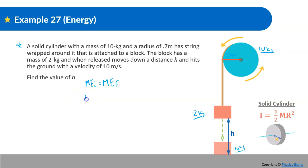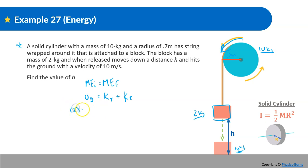At the very beginning, the only energy is gravitational potential energy. Right before the block hits the ground, there are two types: translational kinetic energy from the block, and rotational kinetic energy from the cylinder. So we set gravitational PE equal to the sum of translational KE and rotational KE.